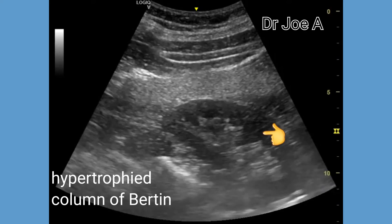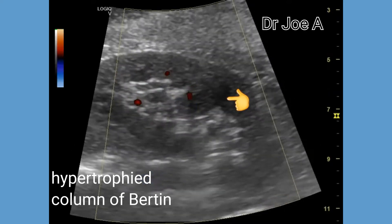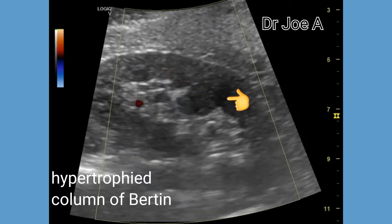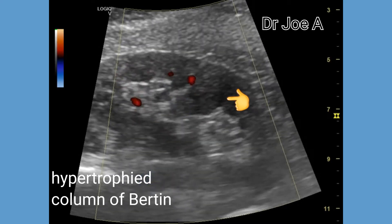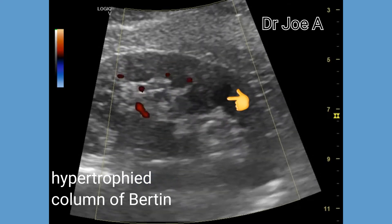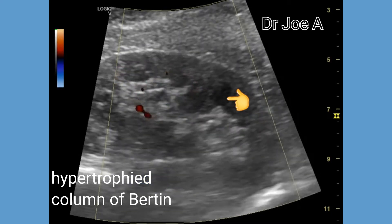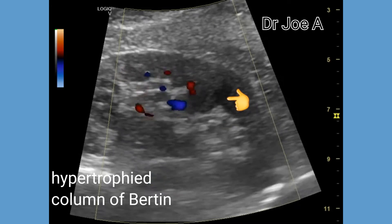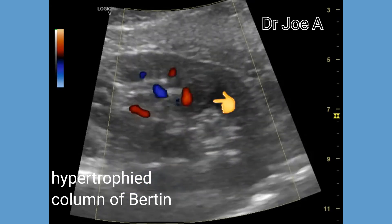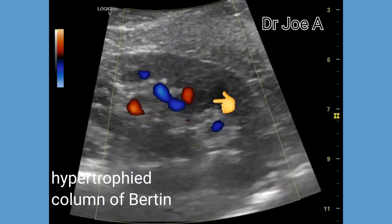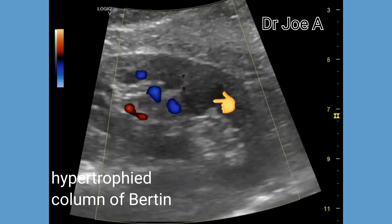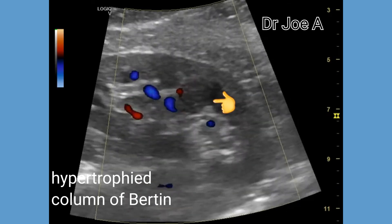On colored Doppler ultrasound, we can see normal vascularity in this region, which rules out any neoplastic growth or malignancy. There is no evidence of neovascularity in this region.